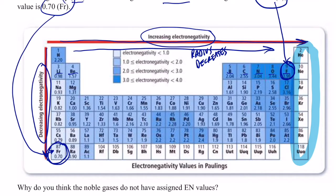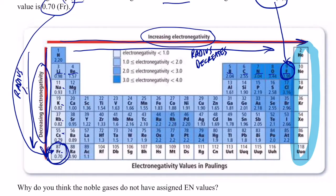The electrons we're trying to attract are going to be closer to that positive nucleus, so when you go across a period the electronegativity of an atom increases. Going down a group — hydrogen to lithium to sodium to potassium to rubidium to cesium to francium — the electronegativity decreases. If you related that to the atomic radius, you would be correct, because when you go down a group the radius increases.